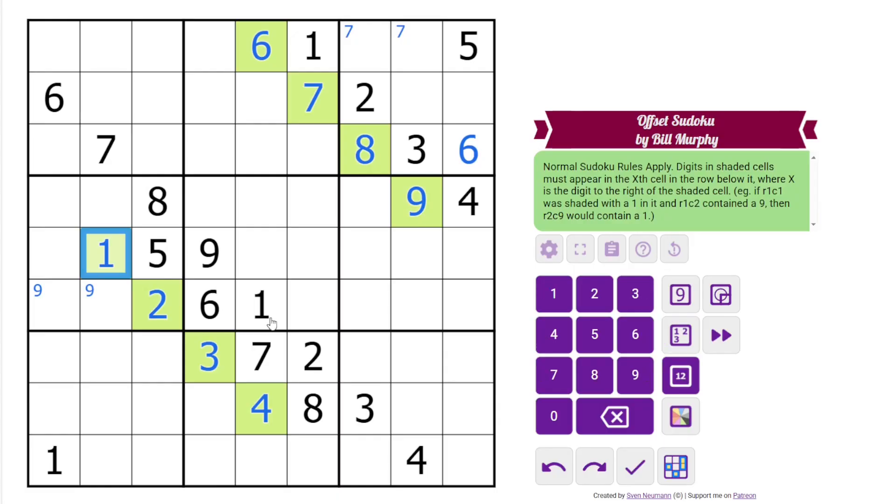We have two 9s here, so 9 is going to go in one of those cells. We have two 1s here. One has to go in that cell. We have two 3s, so 3 goes in one of those cells, and we have some 4s. 4 is in one of those cells.